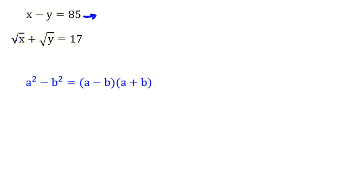Because we have a square root of x and y, there are real numbers, so I can say x equal to root x squared minus y is root y squared. If I use this identity, it is left-hand side. I can say it is equal to root x minus root y times root x plus root y equal to 85.